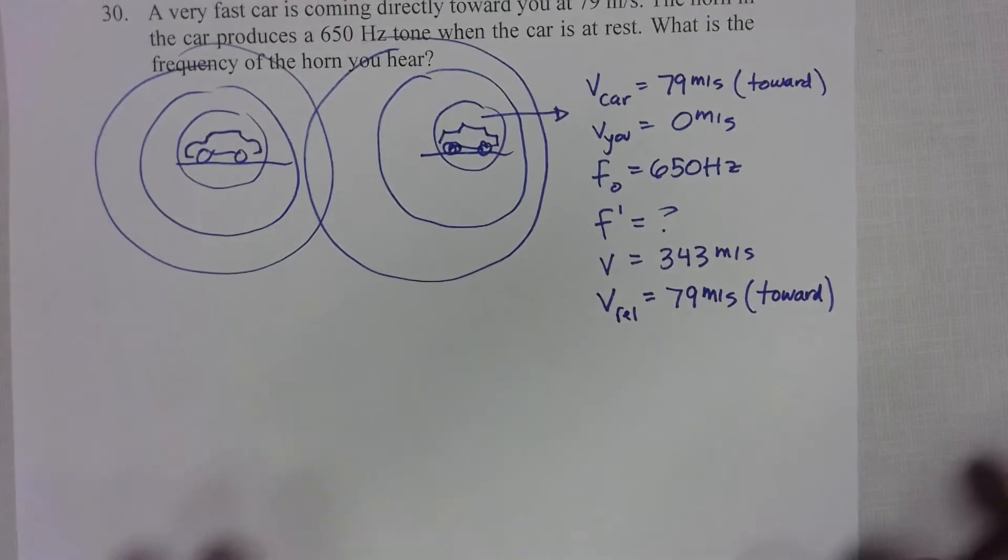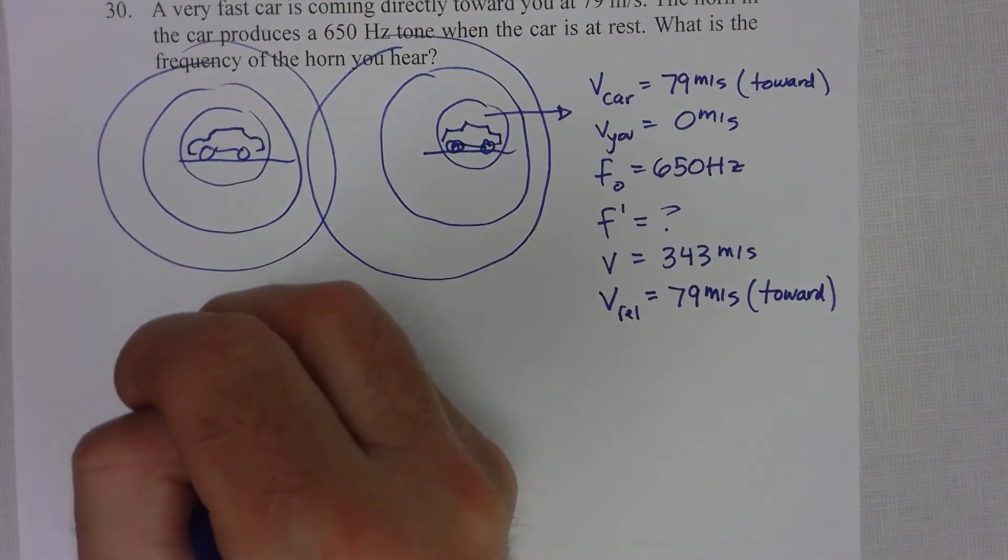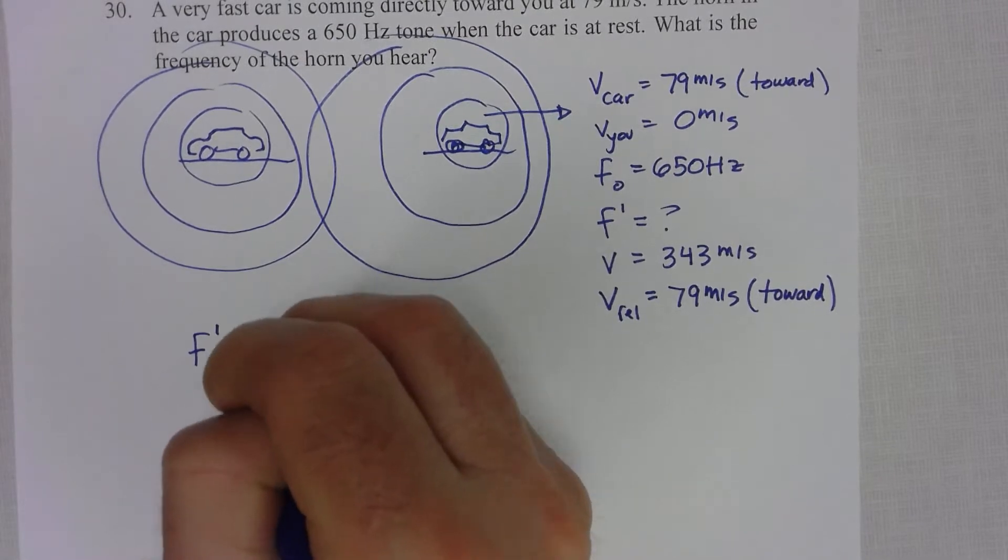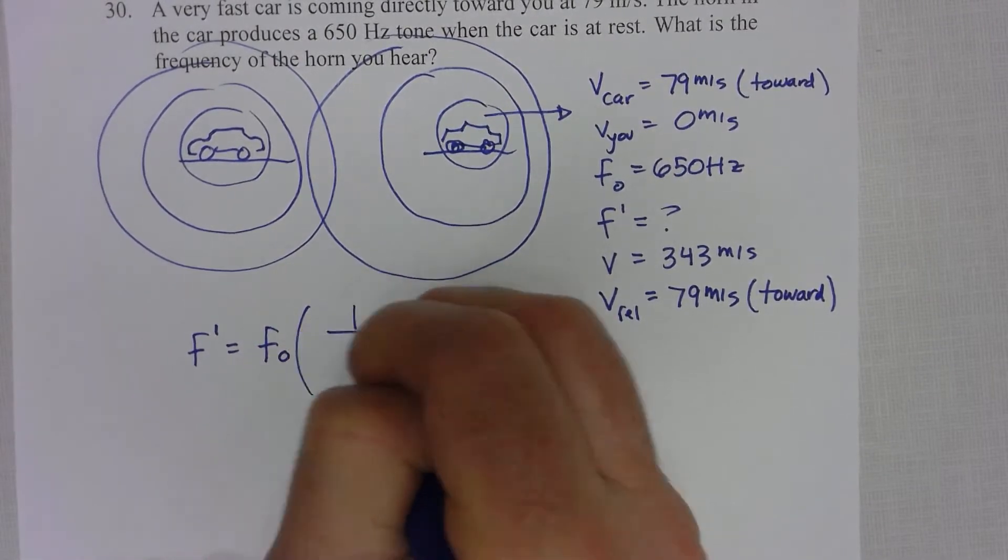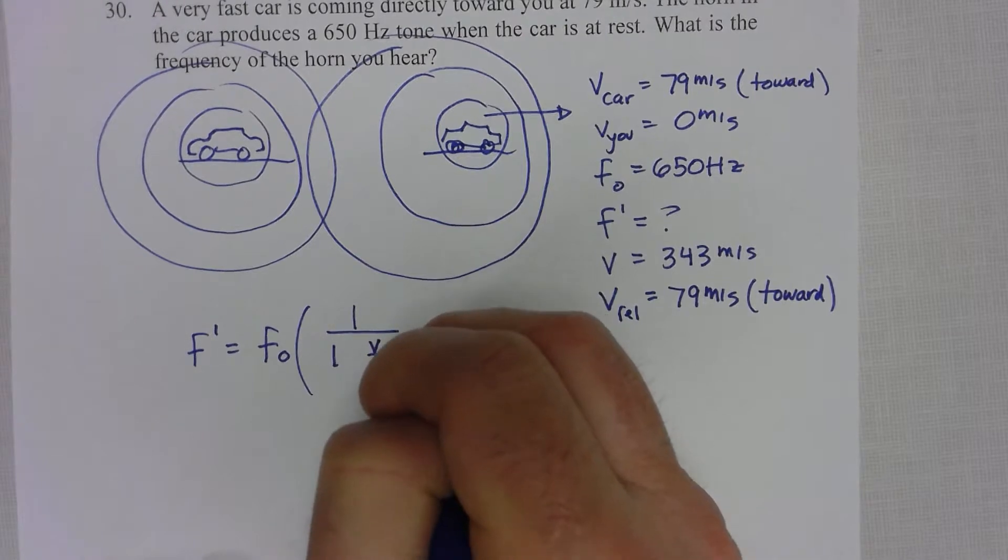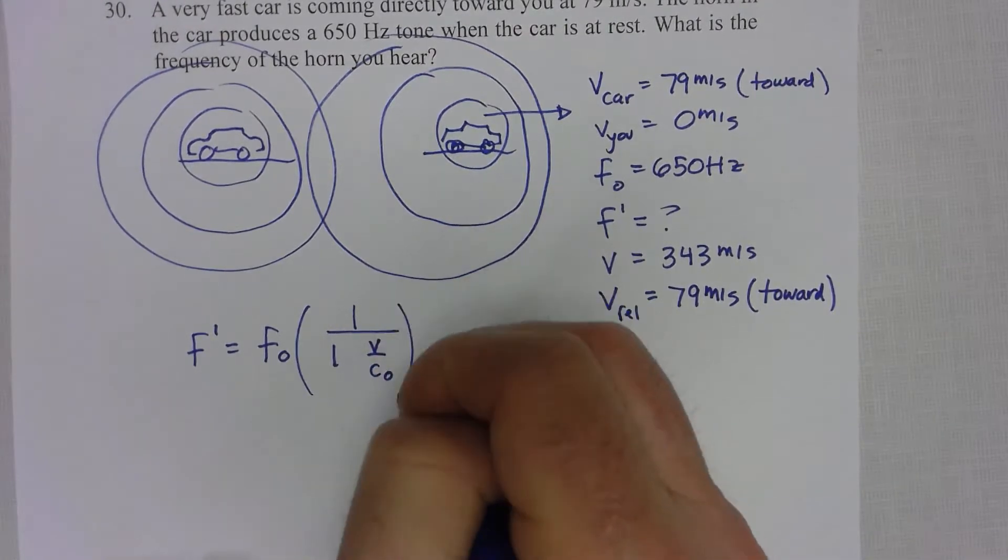Alright, well the equation for the Doppler effect is perceived frequency equals actual frequency times 1 over 1 plus or minus V over C naught.